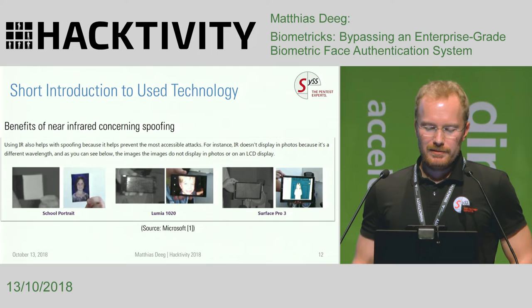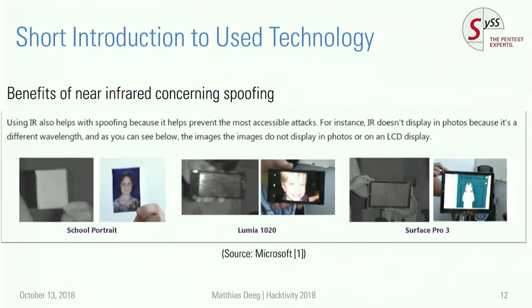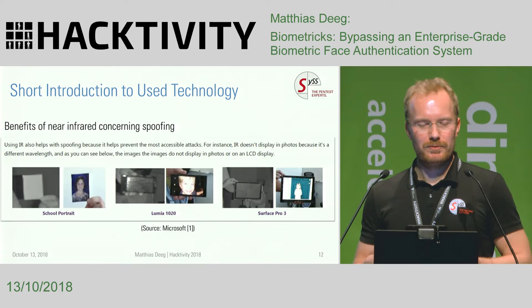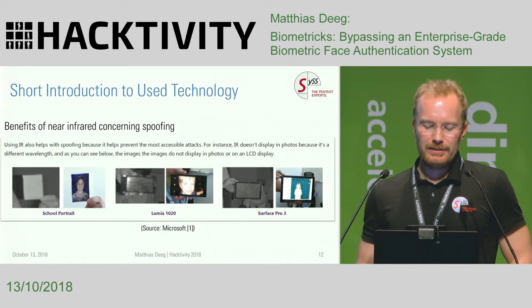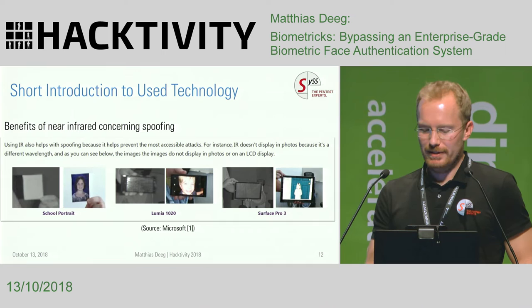An interesting screenshot from the Microsoft website actually started a challenge to do some research on this topic, because near-infrared also has some benefits concerning so-called spoofing attacks. Due to the wavelength of this electromagnetic radiation and available sensors, you cannot simply put a photo in front of the sensor and see the image in the visible light spectrum. You also cannot use an LCD display of different kinds because the sensor sees only a gray area with no actual information where feature extraction can be done.